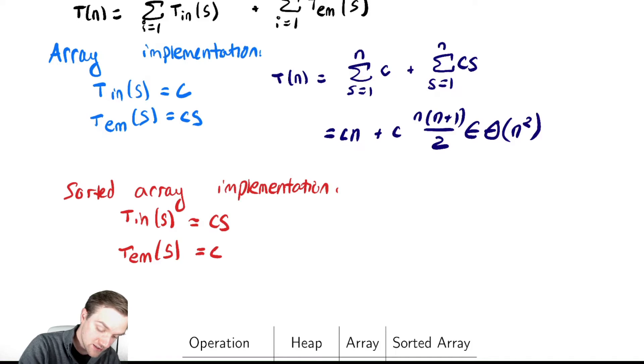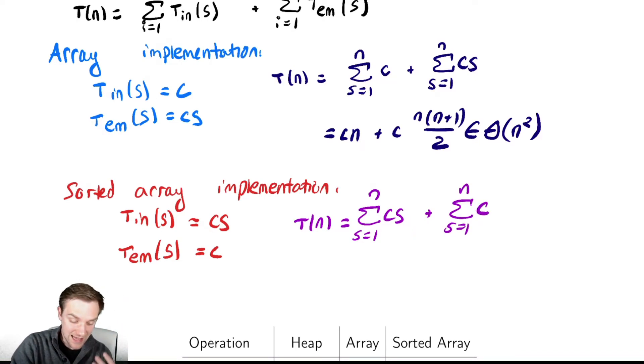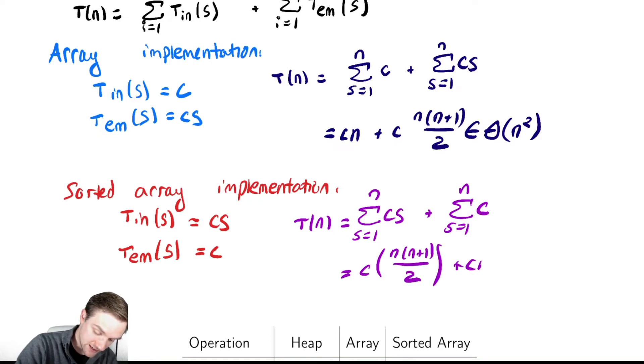If we're analyzing this, our runtime T of n equals the sum from s equals 1 to n of cs, plus the sum from s equals 1 to n of c. This is actually the exact same sum we saw above, just in the opposite order. We get c times n times n plus 1 all over 2, plus cn, which is in theta of n squared.